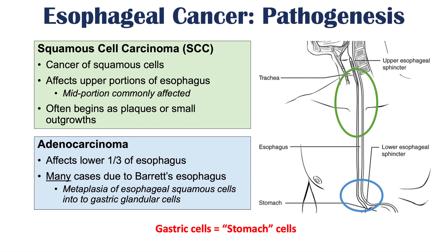With chronic reflux, the acidic gastric contents cause burning and damage to esophageal squamous cells, leading to metaplasia. Those cells begin to become gastric glandular cells — this is called Barrett's esophagus. The longer an individual has Barrett's esophagus, the more likely that one of those cells will become cancerous, ultimately leading to adenocarcinoma.